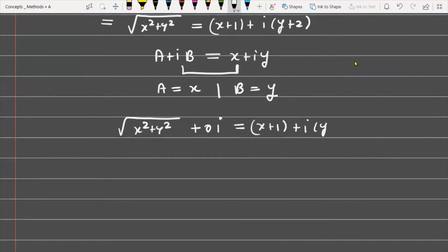You can write √(x² + y²) = x + 1. Now you can check: just compare these two equations. Compare the real part with the real part and the imaginary part with the imaginary part.